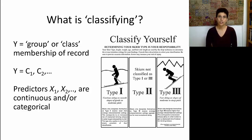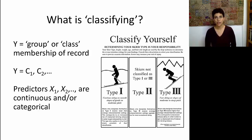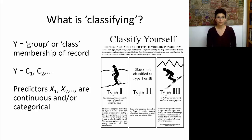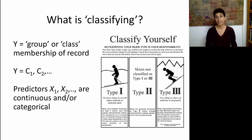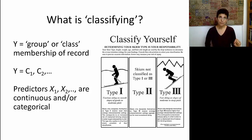We can use the notation C1, C2, etc. to denote the different possible classes of a record. Our predictors, just like in normal regression, can be numerical or categorical or a combination of both. But what's special about classification is that the output has categories.